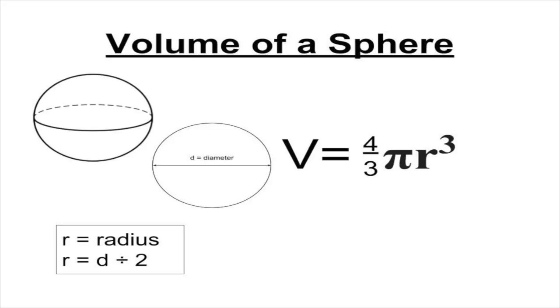And we'd multiply 4 thirds times pi, so it's 3.14, times 2 times 2 times 2, which is 8 in this case. Let's try a calculation with the calculator.